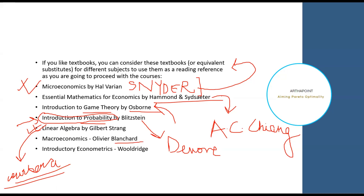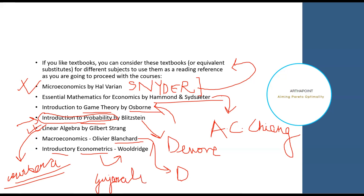For macroeconomics, use Oliver Blanchard, and along with Blanchard, you can use Dornbusch. For econometrics, you can do Wooldridge or Gujarati. I would recommend Gujarati because it's a very well-written book full of examples. If you want to take econometrics as one of your subjects in master's, then Wooldridge is the book you should follow.